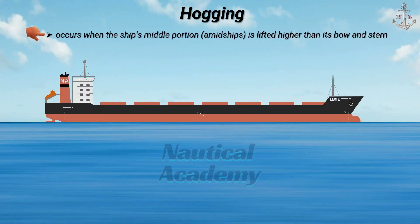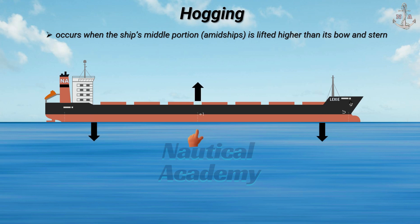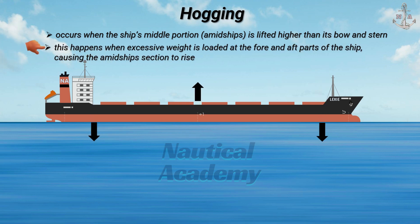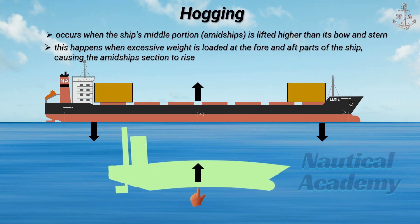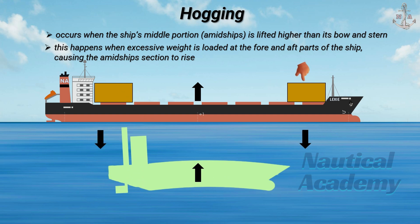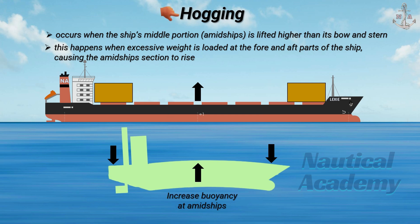Hogging occurs when the ship's middle portion, which is amidships, is lifted higher than its bow and stern. This happens when excessive weight is loaded at the fore and aft parts of the ship, causing the amidship section to rise. The uneven cargo distribution, with a large amount of weight concentrated toward the ends, increases buoyancy at amidships, leading to hogging.